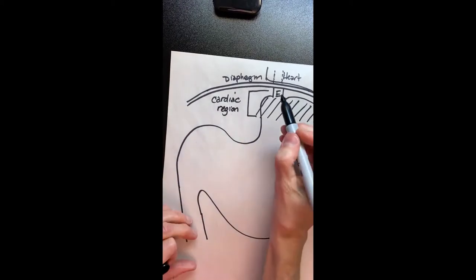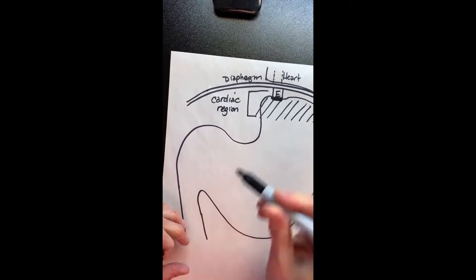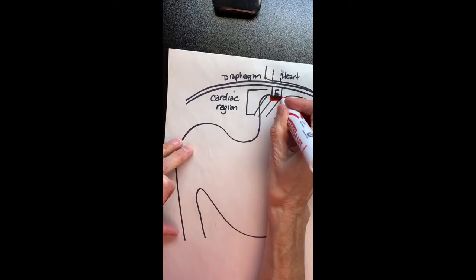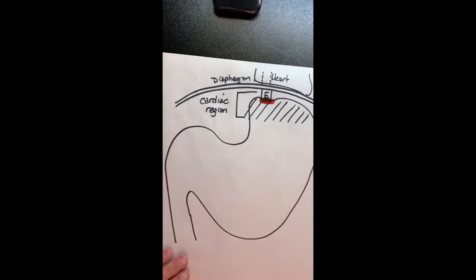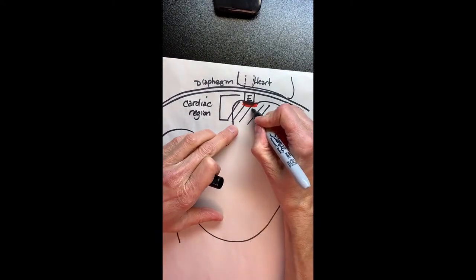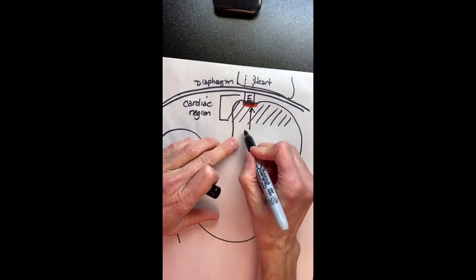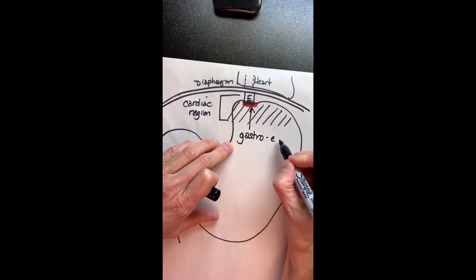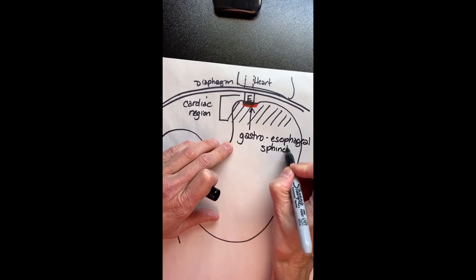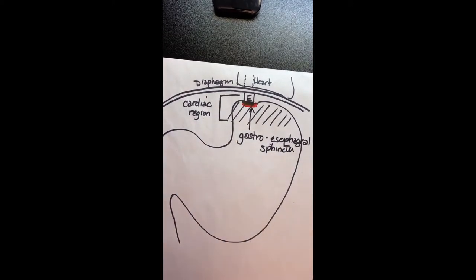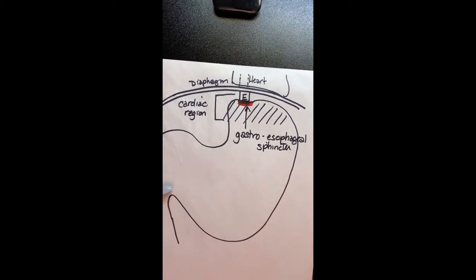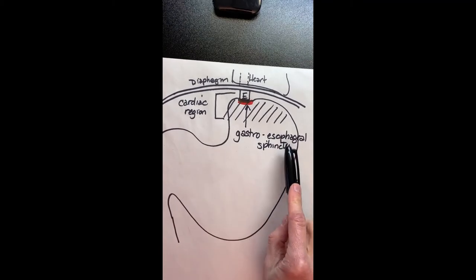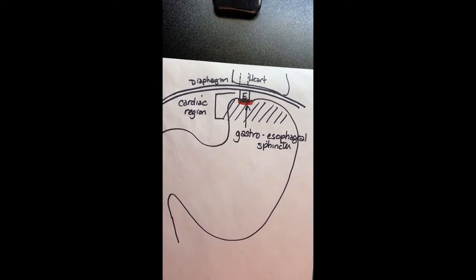To get into the stomach we have to go through a gate — a sphincter. I'll highlight it in red so we're aware there's a gate. The name of that sphincter at the cardiac region is called the gastroesophageal sphincter. It's a compound word: gastro (stomach) + esophageal + sphincter. The gastroesophageal sphincter is the muscle that controls the entrance from the esophagus into the stomach.